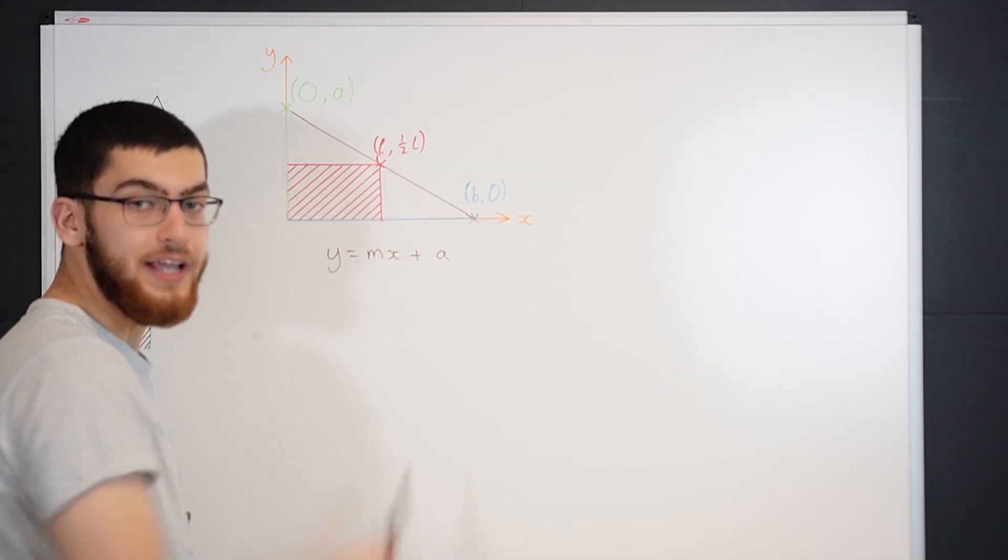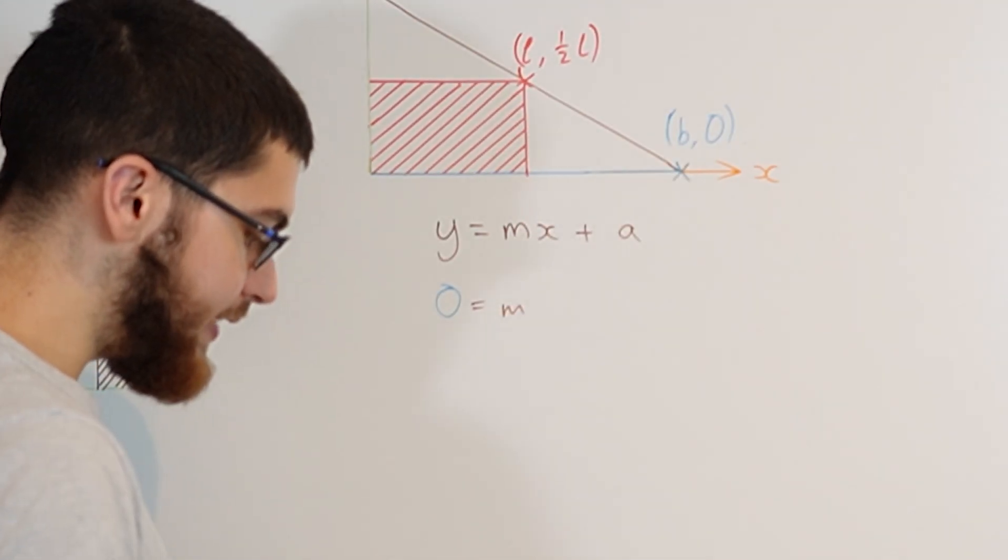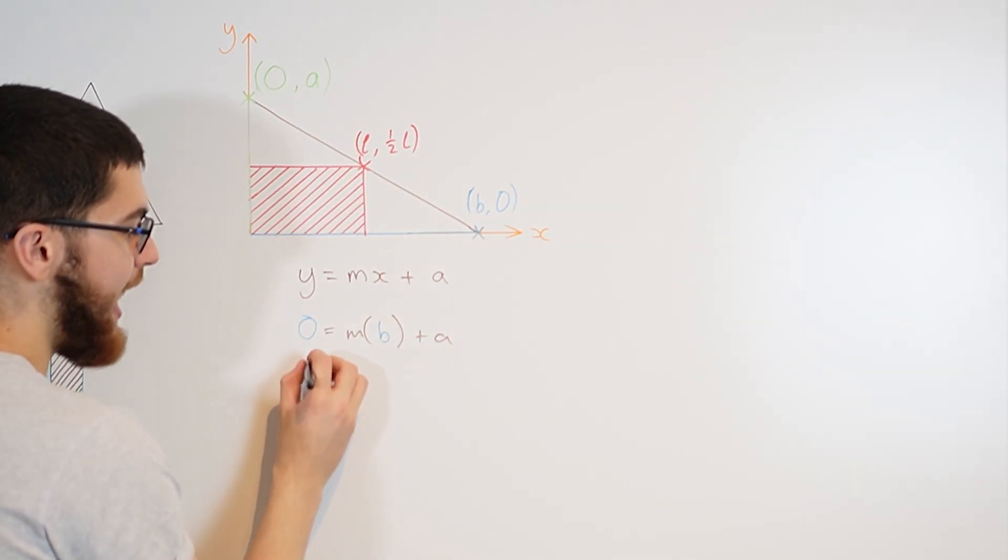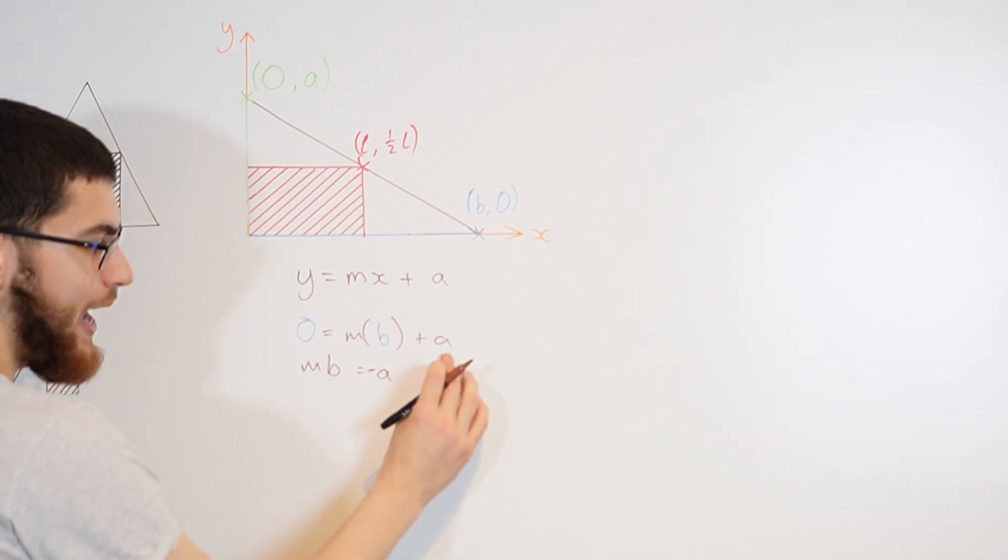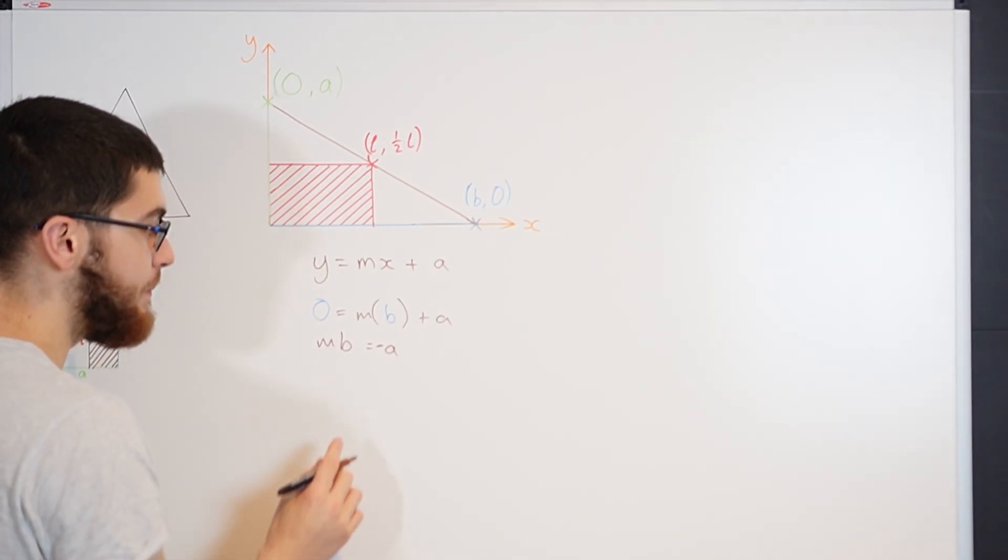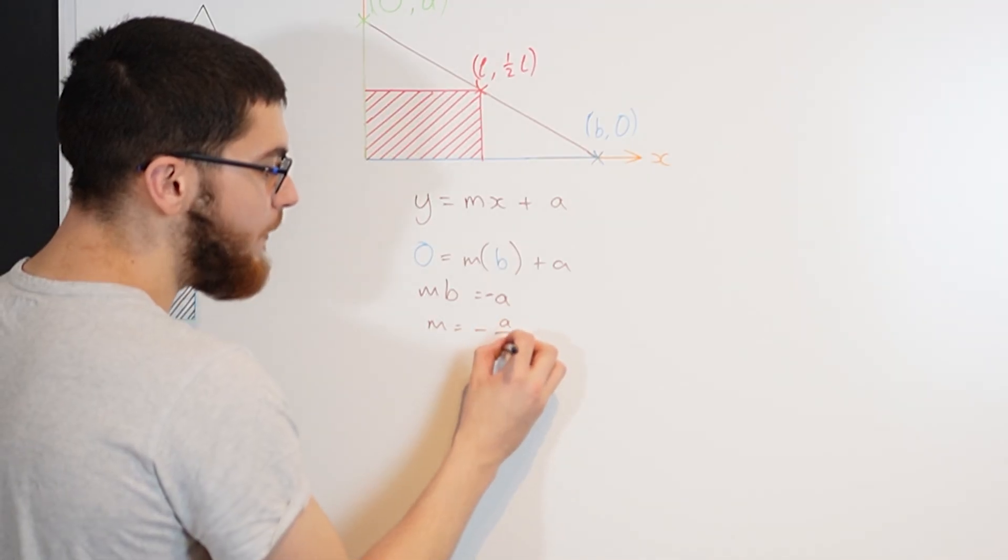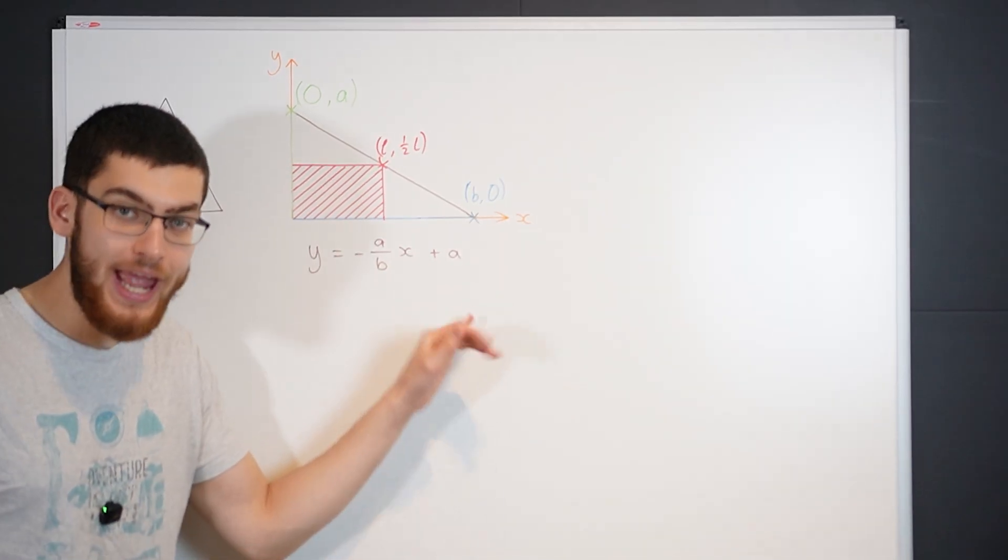Now using this point, we've got Y equals 0, M we still don't know and X is equal to B plus A. So now we can rearrange this and find that MB is equal to minus A, and then M must equal minus A over B. So the final equation we have is Y equals minus A over B times X plus A.